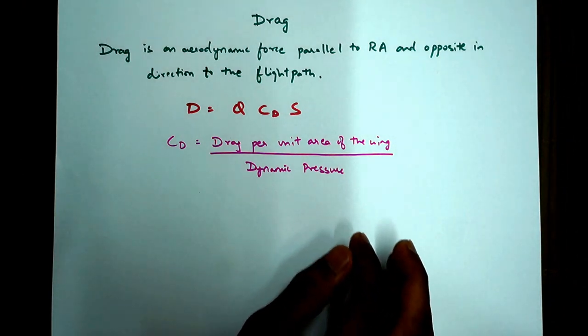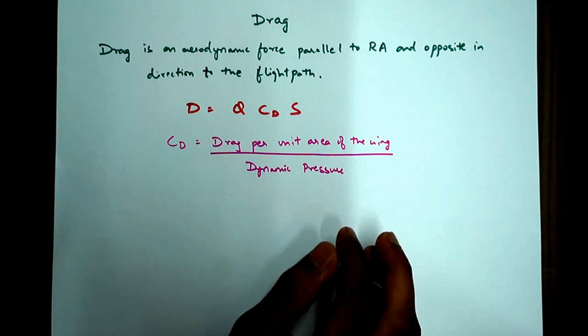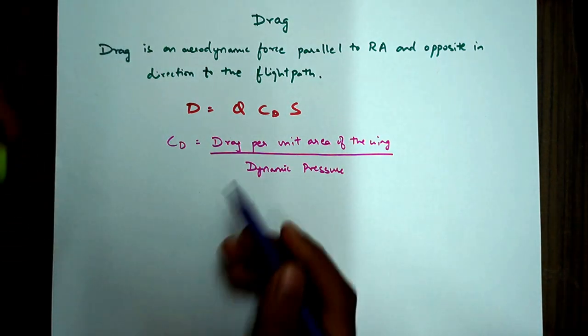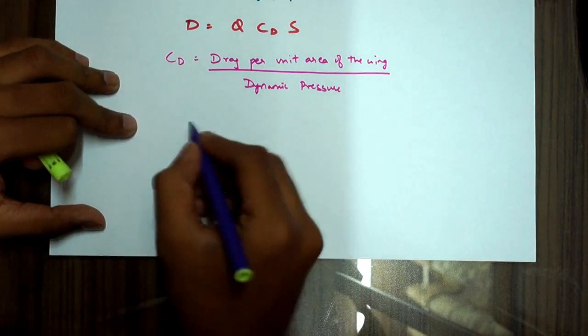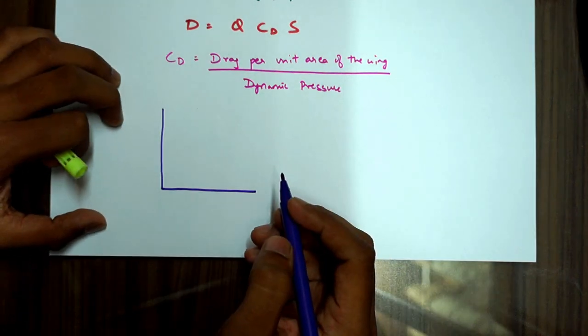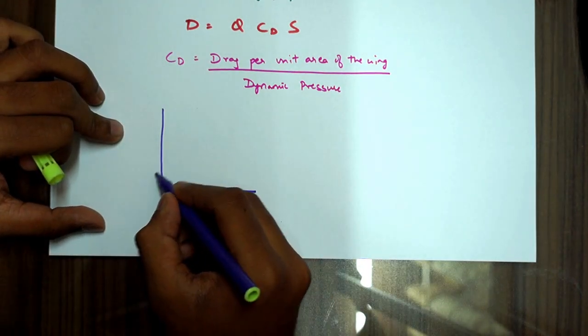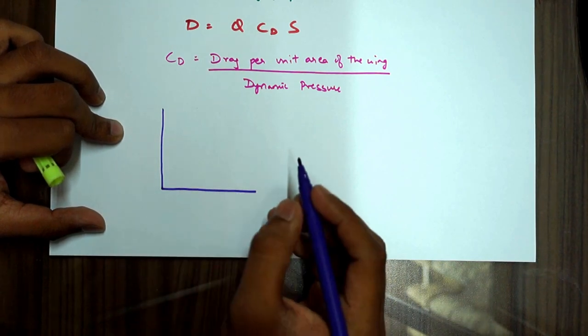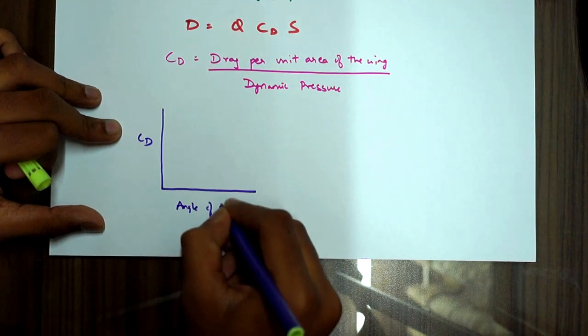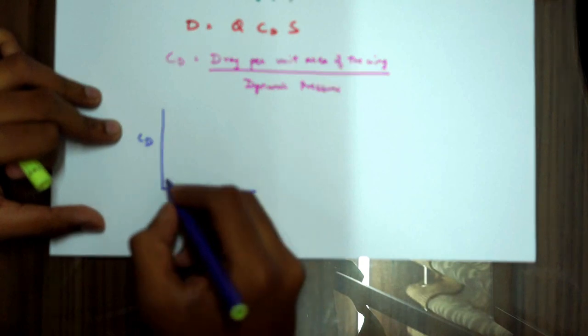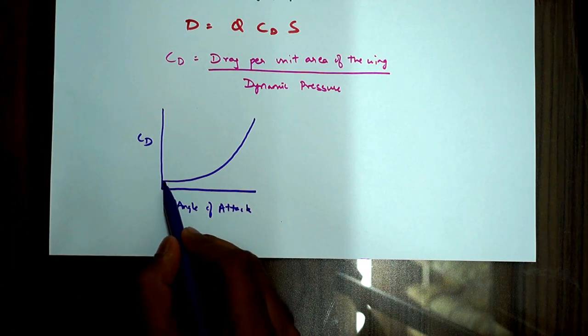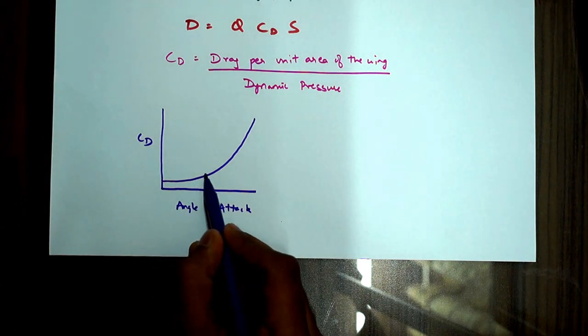So now important part to discuss here is the CD by angle of attack graph. Alright, so we'll draw the graph for that. So it is like this. If you remember, the lift graph was somewhat like this, right? And the CD by angle of attack graph is somewhat like this. So as you can see, at lower angle of attack, the drag is increasing but at a slower rate and a steady rate.